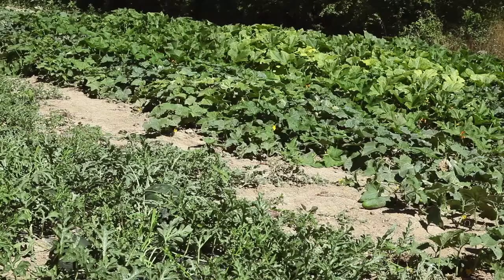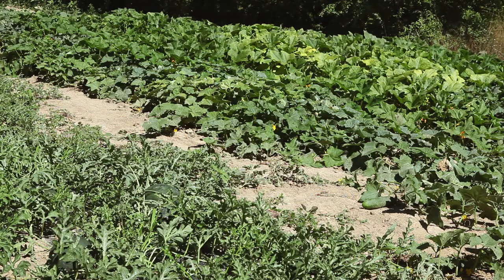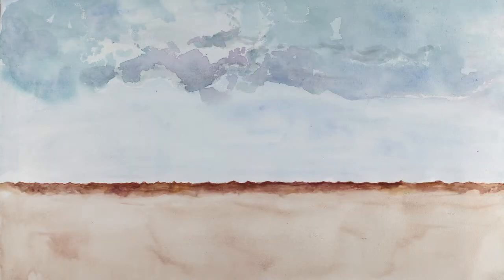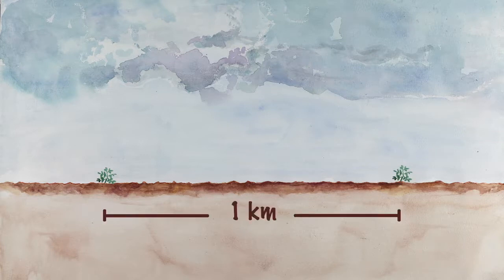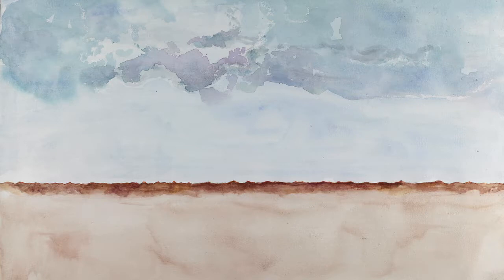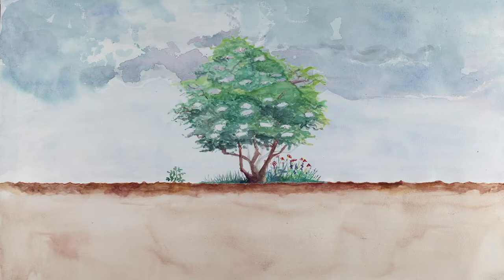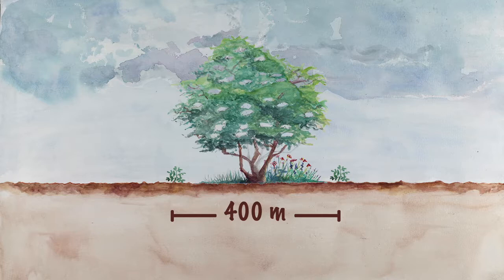Watermelons cannot, however, cross with cucumbers, melons, or squashes. To avoid crossing, separate two varieties of watermelon by one kilometer. This distance can be reduced to 400 meters if there is a natural barrier, such as a hedge.